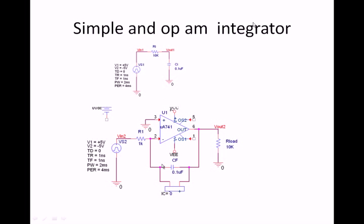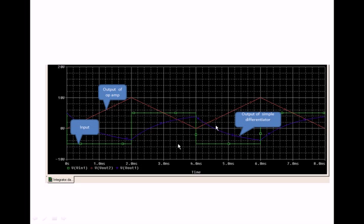For the integrator, the output will be the integration of the input signal. The simple construction uses an RC circuit. The op-amp RC integrator is constructed by connecting the inverting terminal with a resistor and providing capacitance in the feedback. The output of the simple integrator and op-amp integrator are shown — with a square pulse input, you can see the resulting output.